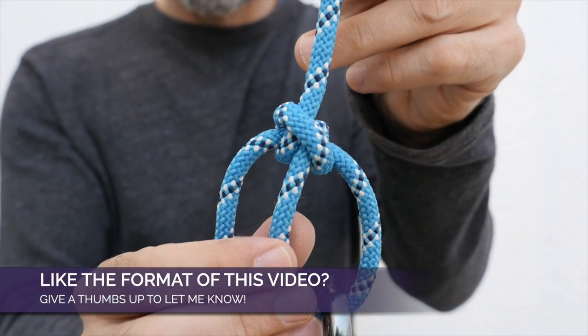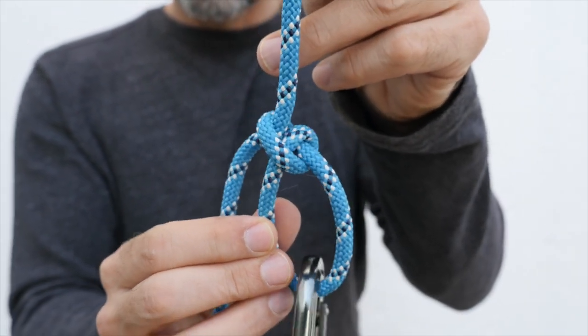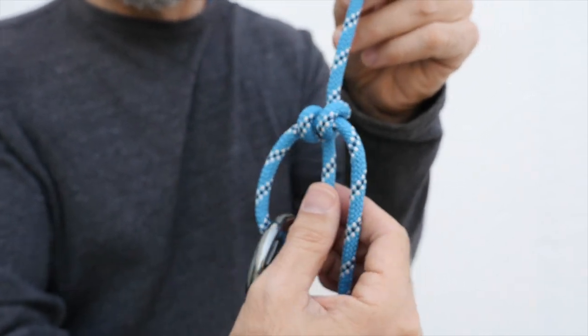This knot is commonly referred to as a two half hitches knot, but sometimes it's referred to as the clove hitch over itself. And now you can see why.